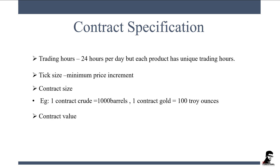The next parameter is contract value, also known as notional value. It is the current value representation in the form of a futures contract. To calculate the contract value, the formula is: contract size multiplied by the current price.